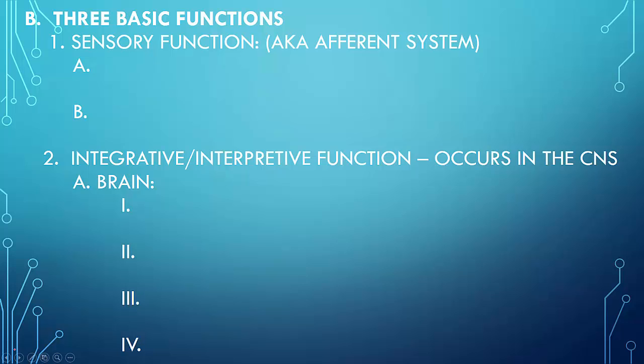There are three basic functions to the nervous system. If we think about sensory functions first, this is called an afferent system. This is what we are talking about when we are talking about our senses, the afferent. And one thing that the afferent system does is it detects change inside or outside the body.